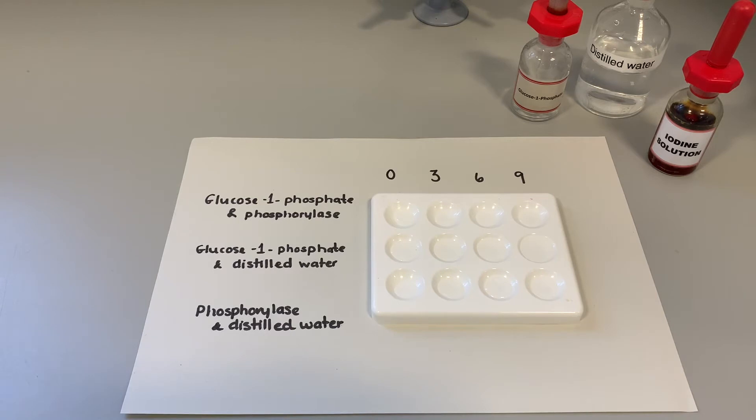Then the second row has got glucose 1-phosphate and distilled water. That's what we call a control. That row is there to prove that glucose 1-phosphate does not turn into starch all by itself. It's the presence of the phosphorylase that's doing that. The reason that we add water is to keep our experiment valid because we're adding a volume of a substance that we know will have no effect.